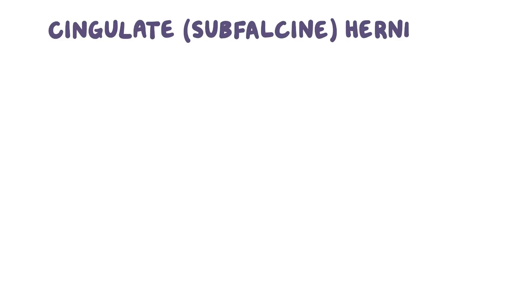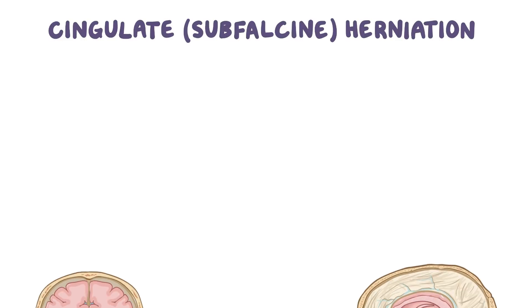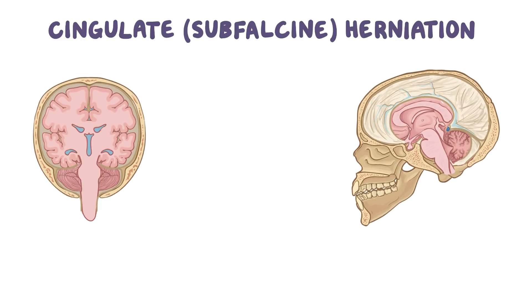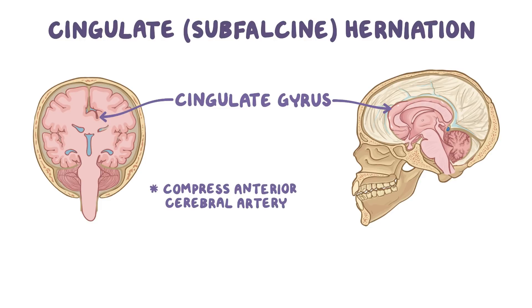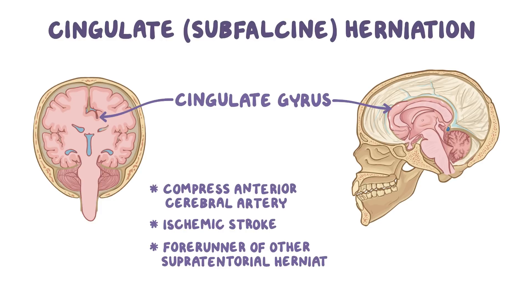The third type is cingulate or subfalcine herniation. In this, the innermost part of the frontal lobe, called the cingulate gyrus, gets squeezed below the free edge of the falx cerebri to the opposite side of the skull. The displaced brain can compress the anterior cerebral artery, causing an ischemic stroke. Additionally, cingulate herniation is often a forerunner of other types of supratentorial herniation.